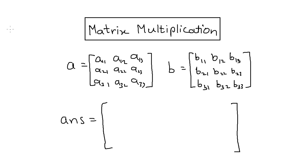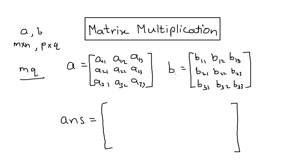Suppose there are two matrices A and B. A has M rows and N columns, B has P rows and Q columns, then the answer will have M rows and Q columns. Here we have two matrices A and B — we will see how matrix multiplication works with these two matrices. This is a 3×3 matrix and this is also a 3×3 matrix, so we should get a 3×3 answer.